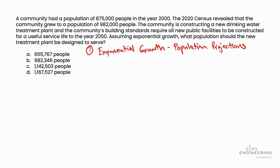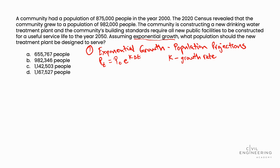That's important because it tells us which equation to use for the population projection. Make sure you double check that as you're working a problem like this. The exponential growth equation is: population at time t is equal to population at time 0, times E raised to K — which is the growth rate — times delta t. What we're going to do in step 1 is solve specifically for K, the growth rate factor.